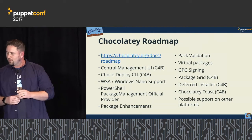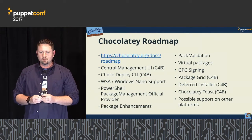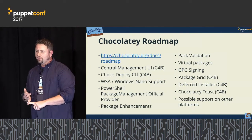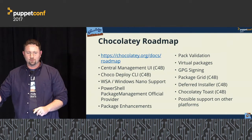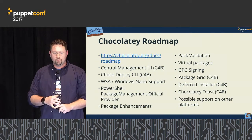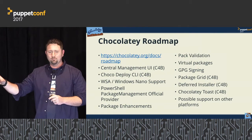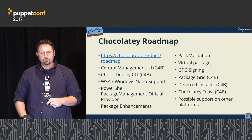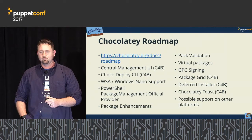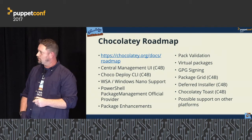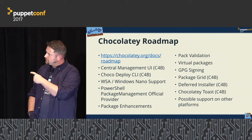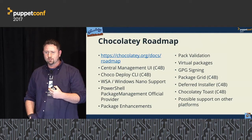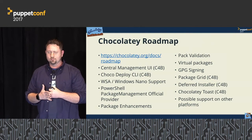On the roadmap: a central management UI that's being built — a nice dashboard alongside Puppet Enterprise where you can see the state of software inside your organization. Also adding a console, and Chocolatey Deploy for running Chocolatey commands against remote systems — though we now have Bolt for that. Windows Nano Support is coming probably early next year. GPG signing and Authenticode signing are also being added — Authenticode is particularly beneficial for organizations wanting to limit which packages can be installed.